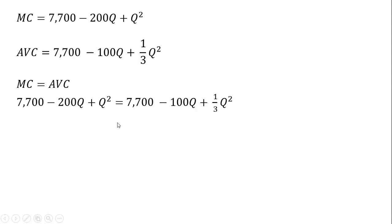And here we're going to solve for Q. The 7,700 on each side cancels. I'm going to add 100Q to both sides, leaving us with minus 100Q on the left-hand side. And then I'm going to subtract 1/3 Q squared from both sides. So Q squared minus 1/3 Q squared leaves us with 2/3 Q squared.